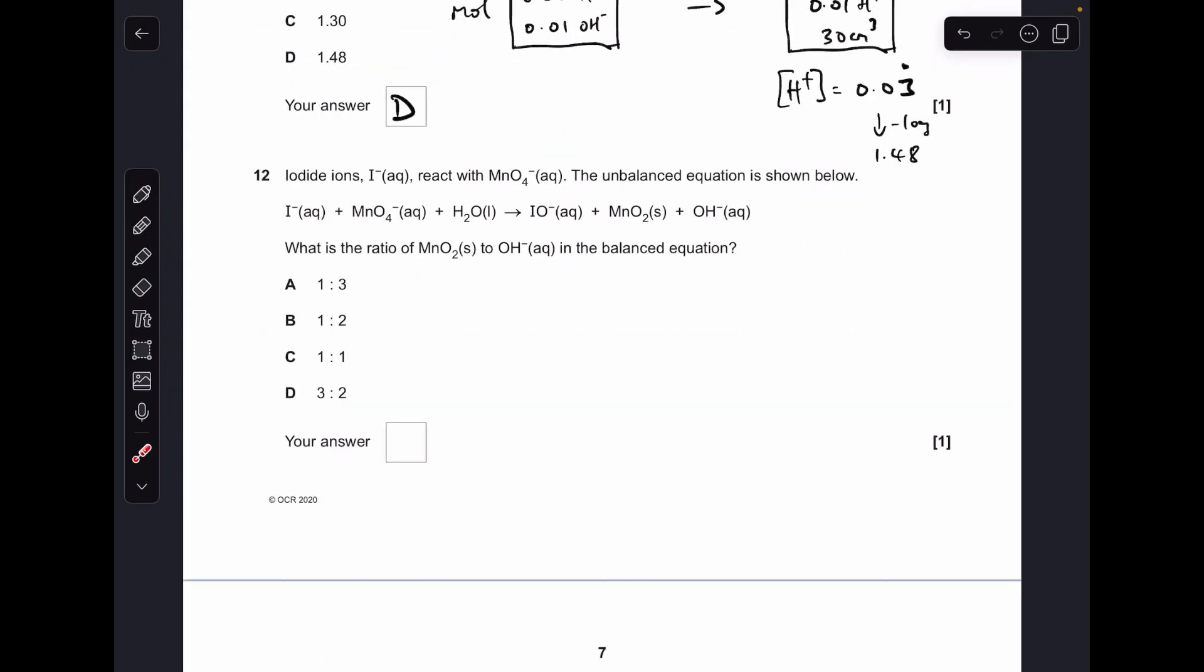Number 12 is pretty tricky. I think there's been quite a few tricky questions on this one so far. I don't know what you think. But anyway, the first thing I'm going to do is work out the oxidation number changes for the iodine and the manganese. So iodine starts at minus one, goes up to plus one, so that's a change of two. The Mn goes from plus seven down to plus four, so that's a change of three.